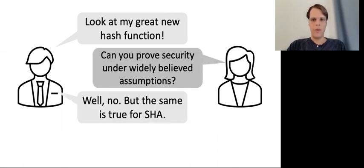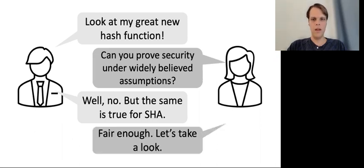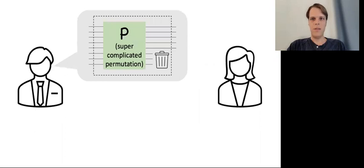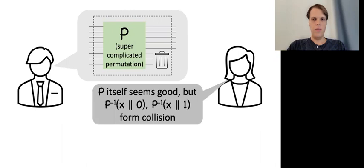Bob points out that for much of practical symmetric crypto, the community does not have such proofs. And in particular, we don't have any proofs for the SHA family of hash functions. Alice therefore acquiesces and decides to look at Bob's construction. Let's say that Bob's hash function starts out by building some complex permutation P and then truncates the output to get a hash function. Alice agrees with Bob that P itself seems like a pretty good permutation, but she points out that the resulting hash function is trivially insecure nonetheless.